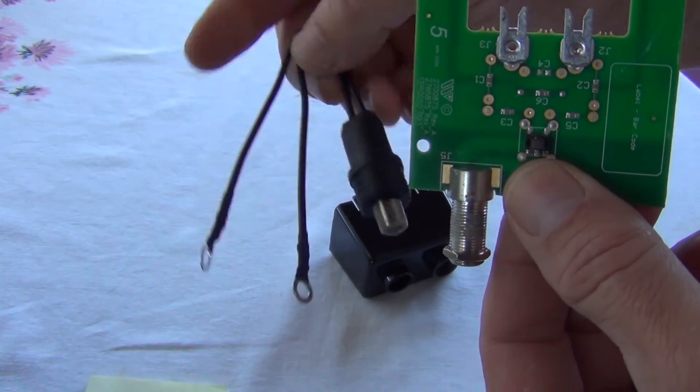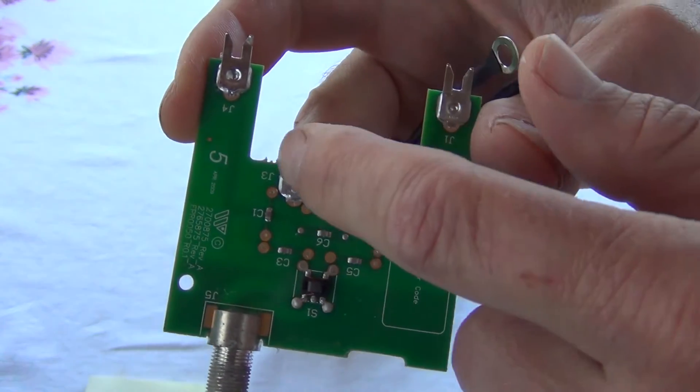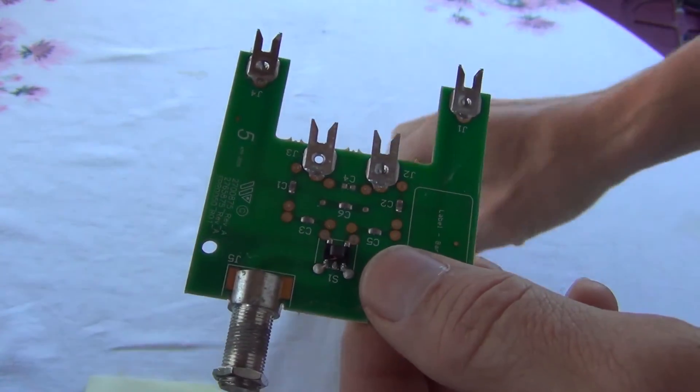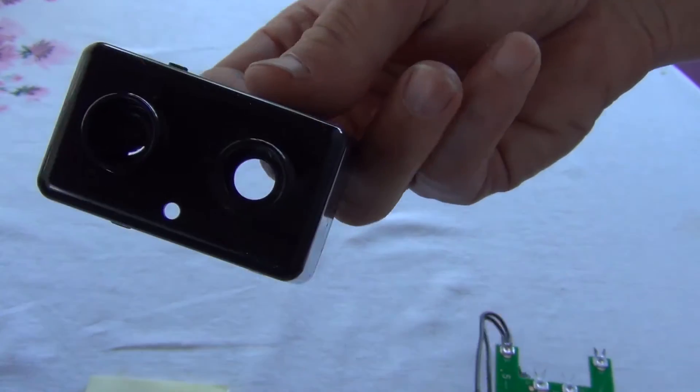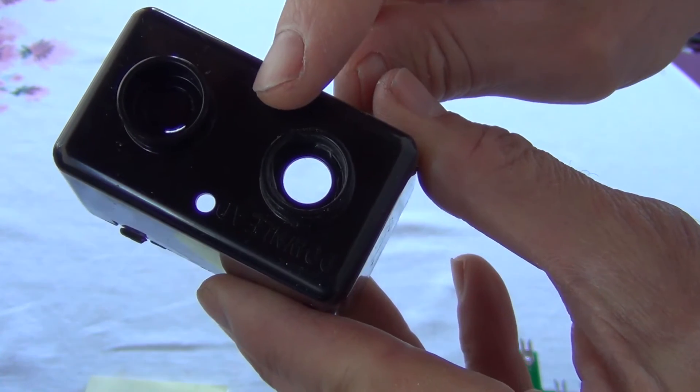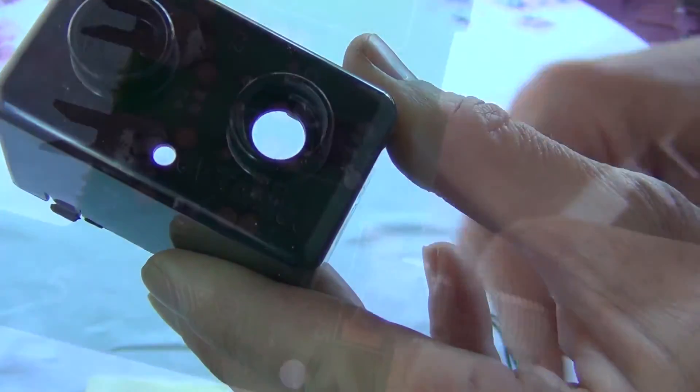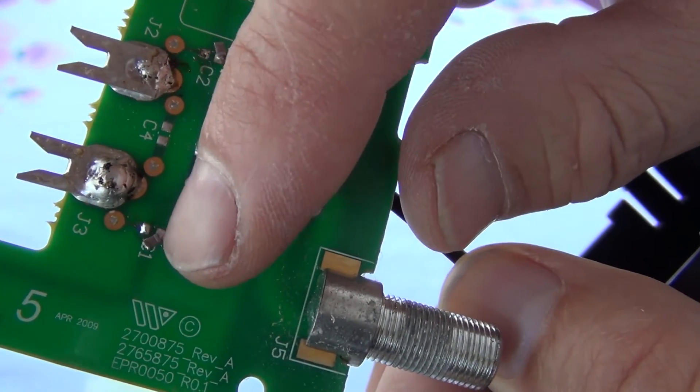I'm going to cut these ends off here and solder them onto each of these points here. And then I'll also put another hole. You'll see one little hole there, but I'm going to put the hole on this side to let the two wires out. And then I'll have my two connections, one for UHF and one for VHF.